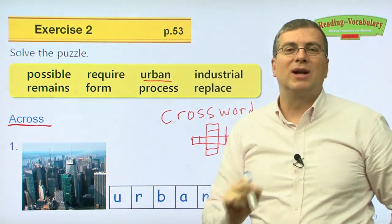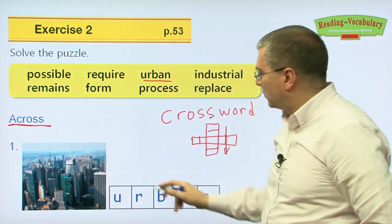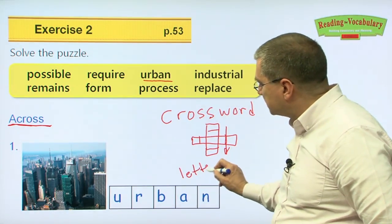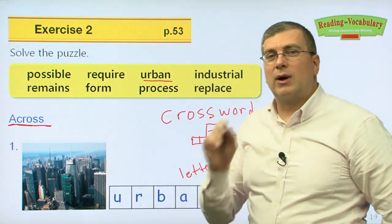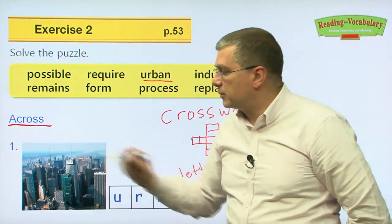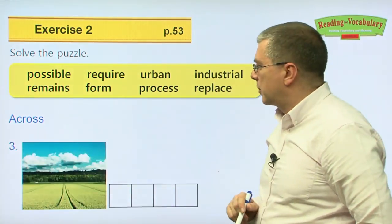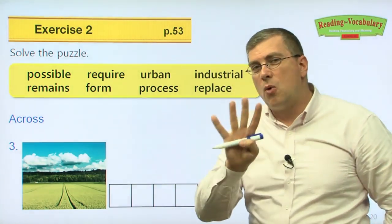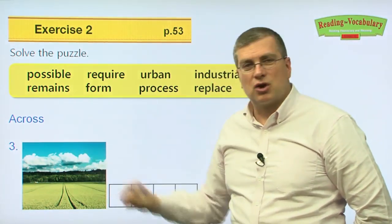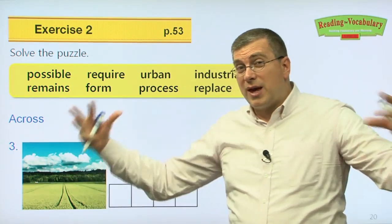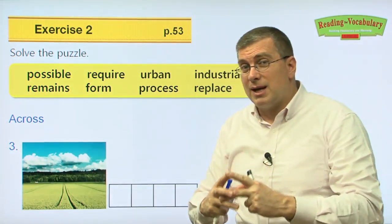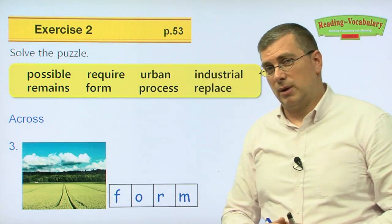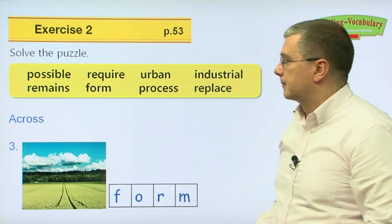An important point about crossword puzzles: you have to fit the same number of letters in the blank. For number three across, we have four boxes — a four-letter word that matches this picture. Remember, when things come together, what do they do? They form something — they form a field or a landscape. To form. That's our four-letter word.